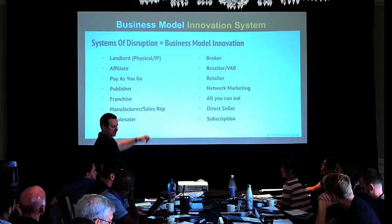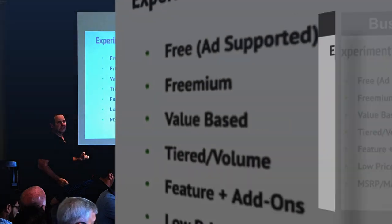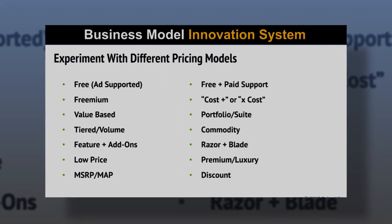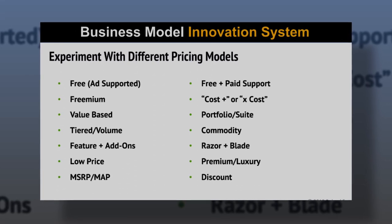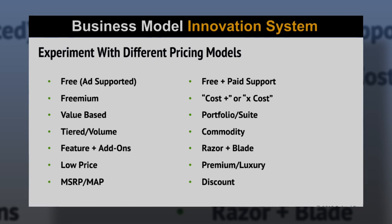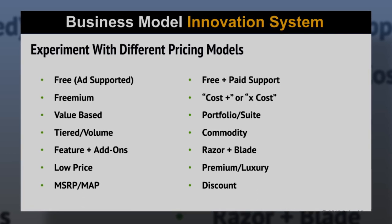I like to look at these as models and have that as the first thing I'm thinking about. Then the second thing is the different pricing models. There's free with ad support, freemium with upsells based on value, tiered volume discounts as people consume more, features and add-ons, low price leader like Walmart, MSRP versus minimum advertised price, free with paid support, cost plus or times cost, portfolio suites like Microsoft Office or Adobe Creative Suite, commodity-based pricing, razor-and-blades, free cell phone with a contract, and premium, luxury, or discount.